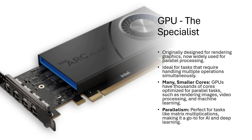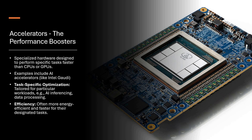Moving to GPU — it was originally designed for rendering graphics and now is widely used for parallel processing. It is ideal for tasks that require handling multiple operations parallelly or simultaneously. It has thousands of smaller cores optimized for parallel tasks such as rendering images, video processing, and even machine learning. It is perfect for tasks like matrix multiplication, making it a go-to option for AI and deep learning as well.